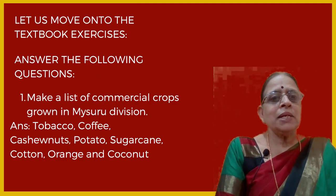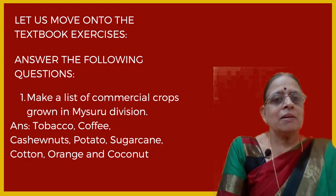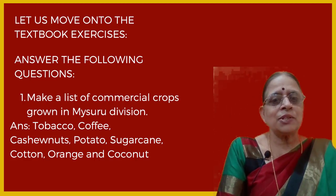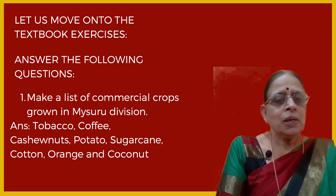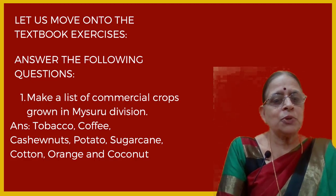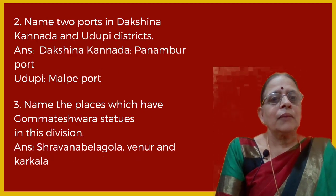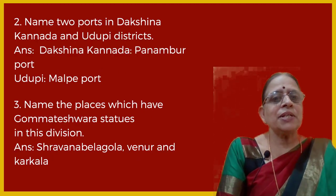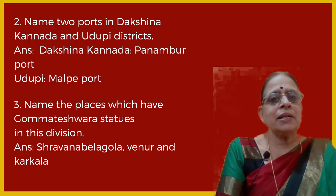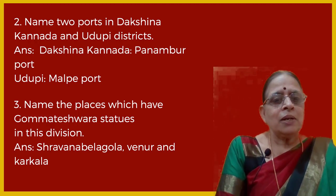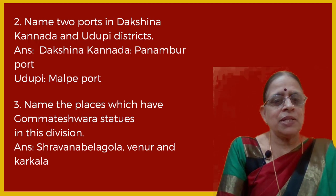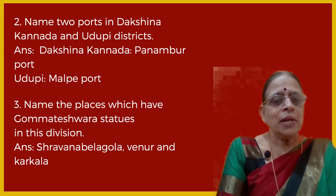Let us move on to the textbook exercises. Make a list of commercial crops grown in the Mysore division: tobacco, coffee, cashew nuts, potato, sugarcane, cotton, orange and coconut. Name two ports in Dakshinakannada and Udupi districts: Dakshinakannada — Panambur port; Udupi — Malpe port. Name the places which have Gomateshwara statues in this division: Shravanabelagola, Venur and Karkala.